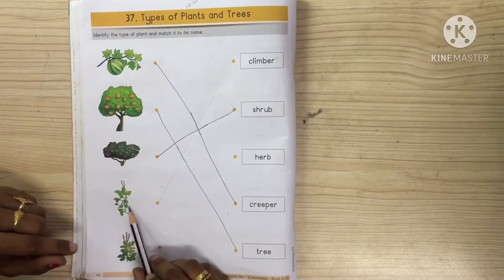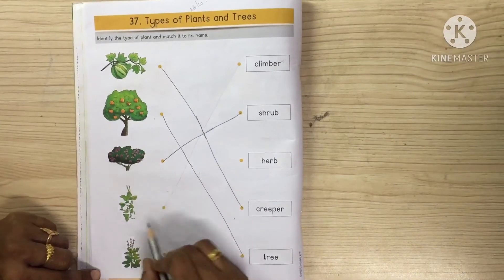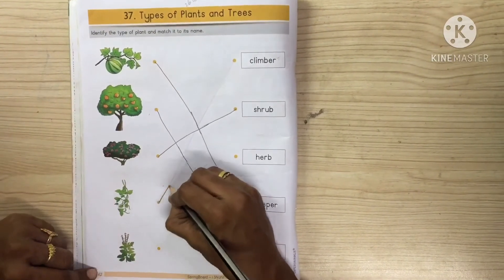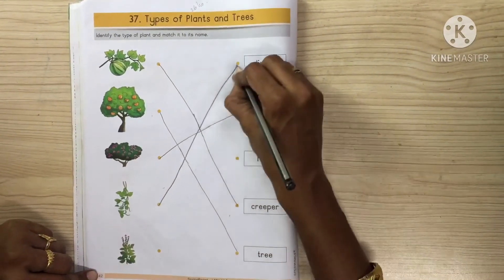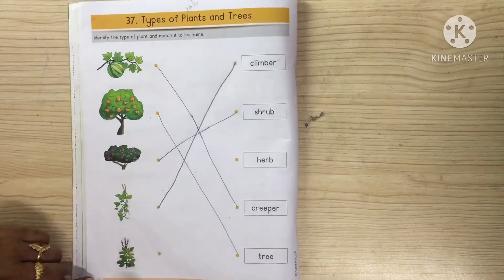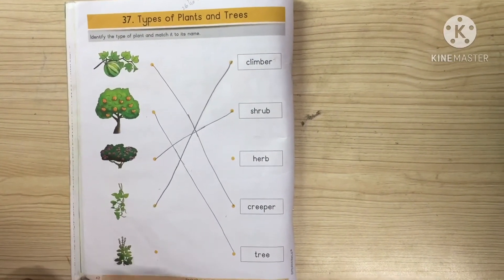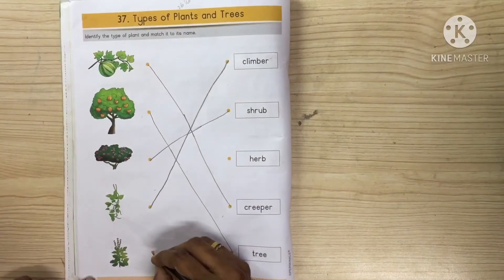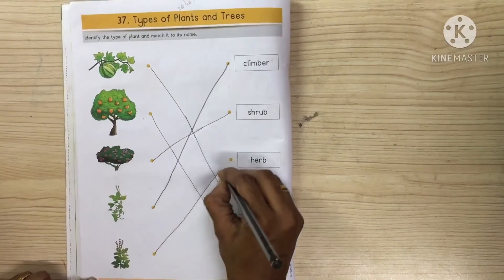Which type of plant is this, children? This is a climber, so we will match it to climber. Now which type of plant is this, children? This is a tulsi plant, so it's a herb.